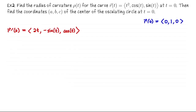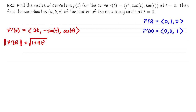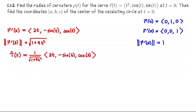Now we differentiate: R prime of t is (2t, -sine t, cosine t). At t equals 0, the velocity vector is (0, 0, 1). The speed in general is the square root of 1 plus 4t², so at t equals 0 the speed is 1. In general T-hat of t is 1 over √(1 + 4t²) times (2t, -sine t, cosine t), and at t equals 0 it's just (0, 0, 1) since the velocity was already a unit length vector.